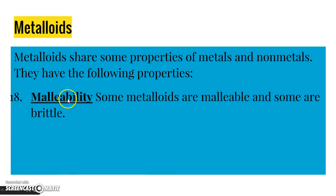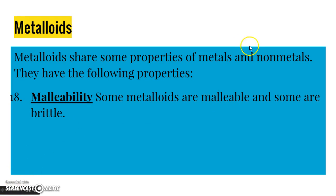Number 18: metalloids — some are malleable and some are brittle, so they kind of share properties. So that's everything for your homework and for the video. It's important to remember most of the elements on the periodic table are metals. Some are non-metals and they don't have any of the same properties as metals. And then metalloids kind of share properties — they're sort of in between.